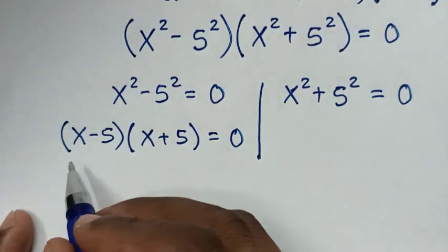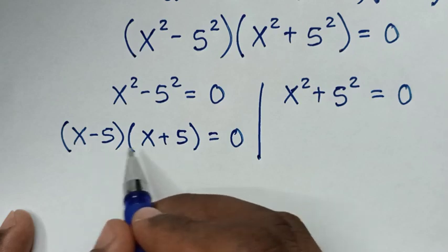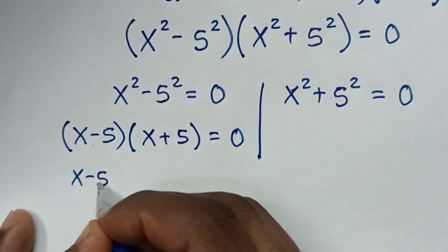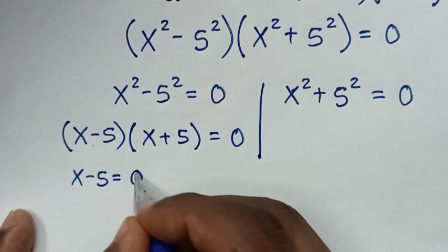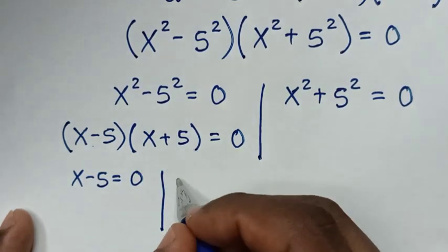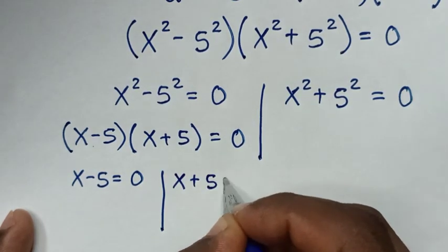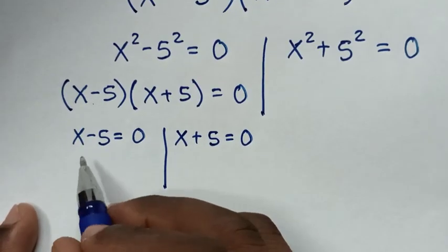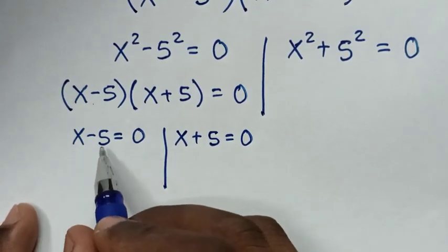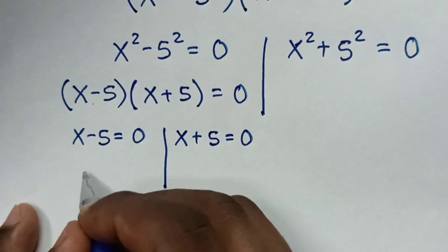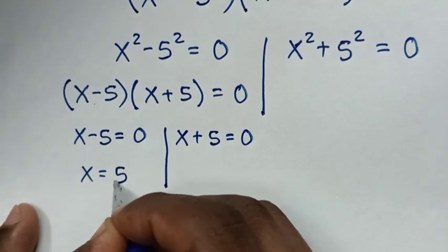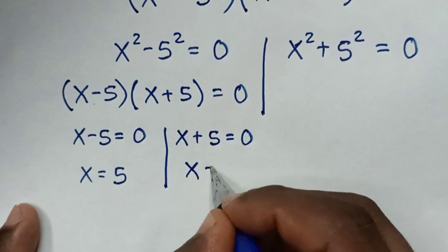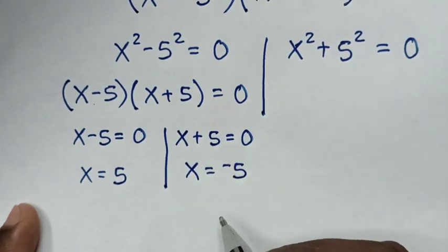From (x minus 5)(x plus 5) equals 0, we get two solutions. From x minus 5 equals 0, taking negative 5 to the right side gives x equals 5. From x plus 5 equals 0, taking 5 to the right side gives x equals negative 5.